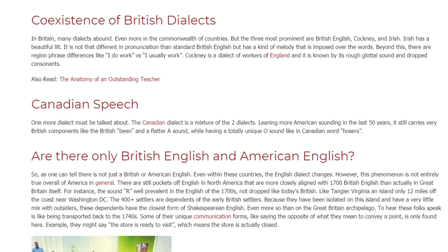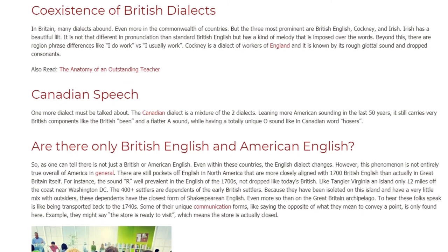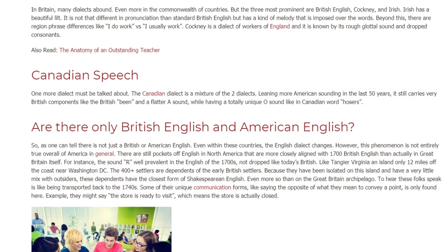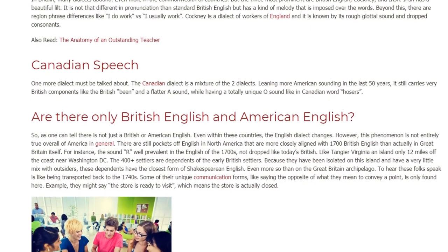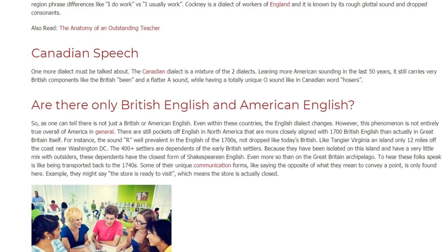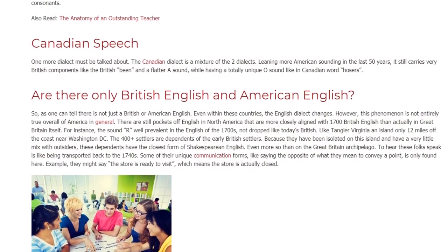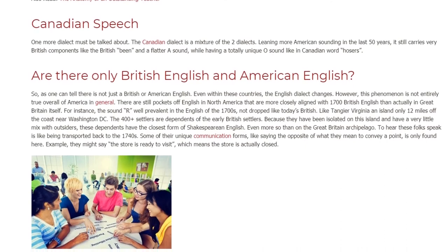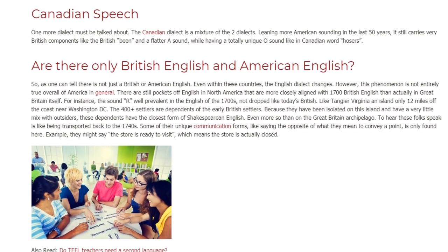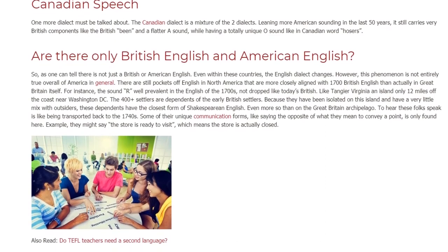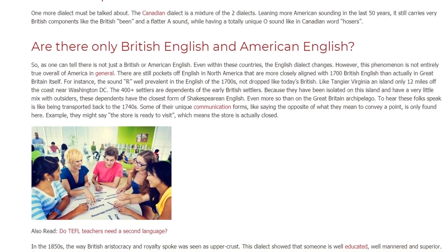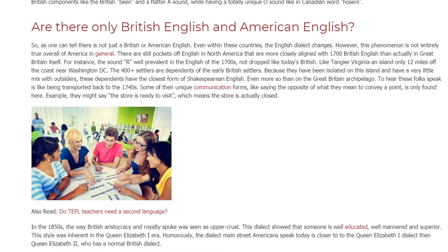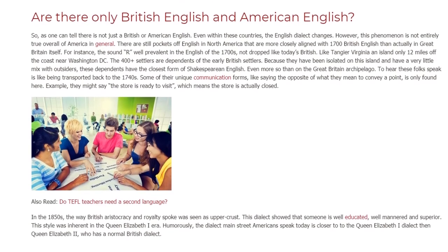Are there only British English and American English? As one can tell, there is not just British or American English — even within these countries the English dialect changes. There are still pockets of English in North America more closely aligned with 1700s British English than English actually spoken in Great Britain itself. For instance, the R sound prevalent in the English of the 1700s was not dropped as in today's British. Like Tangier, Virginia — an island only 12 miles off the coast near Washington, D.C. — where 400-plus settlers are descendants of the early British settlers. Because they have been isolated on this island with very little mixing with outsiders, these descendants have the closest form of Shakespearean English, even more so than on the Great Britain archipelago.